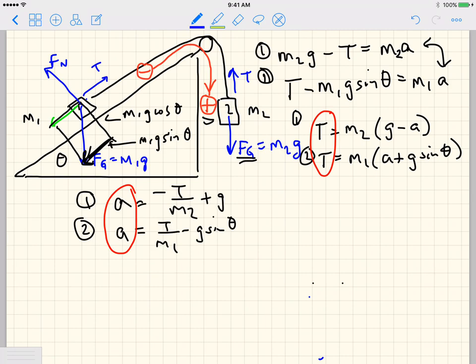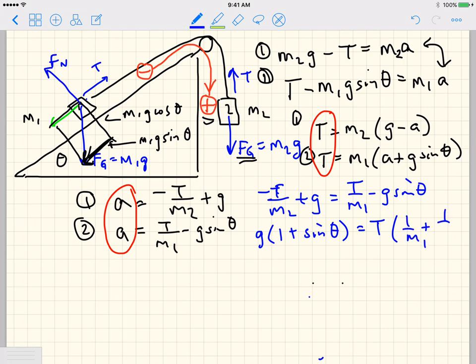And in that case, we have minus T over m2 plus g is equal to T over m1 minus g sine theta, which then means that g one plus sine theta. I'm bringing both g equations on the left side, and on the right side, I have T times 1 over m1 plus 1 over m2. All right, it's just algebra. I know I'm doing it quickly, but you can confirm this for yourself. And so that means that the tension is equal to 1 plus g, sorry, g times 1 plus sine theta, divided by 1 over m1 plus 1 over m2.